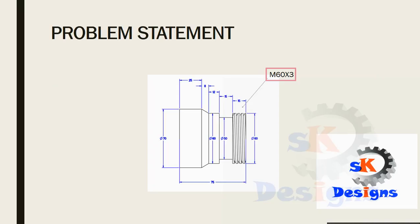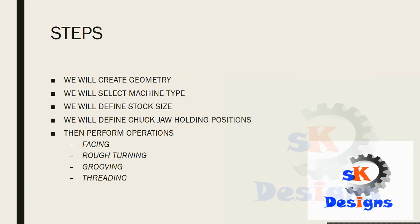This is our problem statement — we have to generate this model using Mastercam. The steps will be: first we will create the geometry, then we will select the machine type, then we will define the stock size, then we will define the chuck job holding positions where the stock will be held, then we will perform the operations. The first operation will be facing, second will be turning, third will be grooving, and the final operation will be threading.